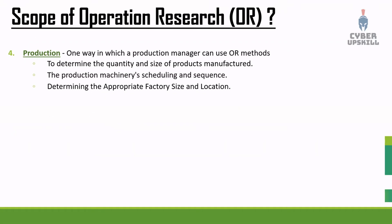The fourth scope is production. A production manager can use OR in three ways: to determine the quantity and size of products to manufacture, for machinery scheduling and sequencing, and for determining the appropriate factory size and location. Operation research helps predict and plan all of these production decisions.